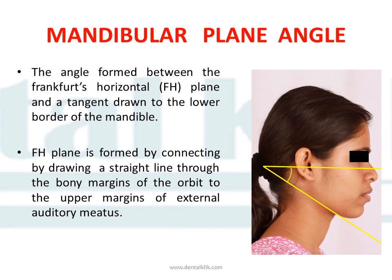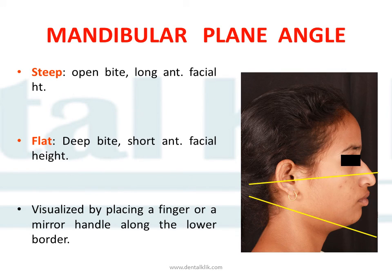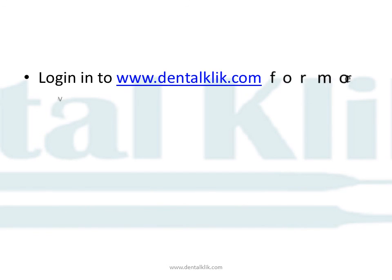The mandibular plane angle is also assessed in the lateral facial profile. It is the angle formed between the Frankfurt horizontal plane and a tangent drawn from the lower border of the mandible. The Frankfurt horizontal plane is visualized by drawing a line through the bony orbital margins to the upper margins of the external auditory meatus. The mandibular plane is visualized by placing a finger or mirror handle along the lower border of the mandible. The mandibular plane angle can be steep, seen in open bite or long anterior facial height cases, or flat, seen in deep bite or reduced lower anterior facial height cases.